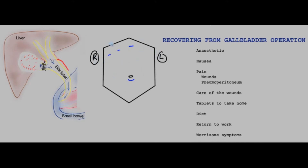This is a cartoon of the abdomen — the right side and the left, the rib cage, and the groin area. Here are the incisions which are required to perform the keyhole operation.